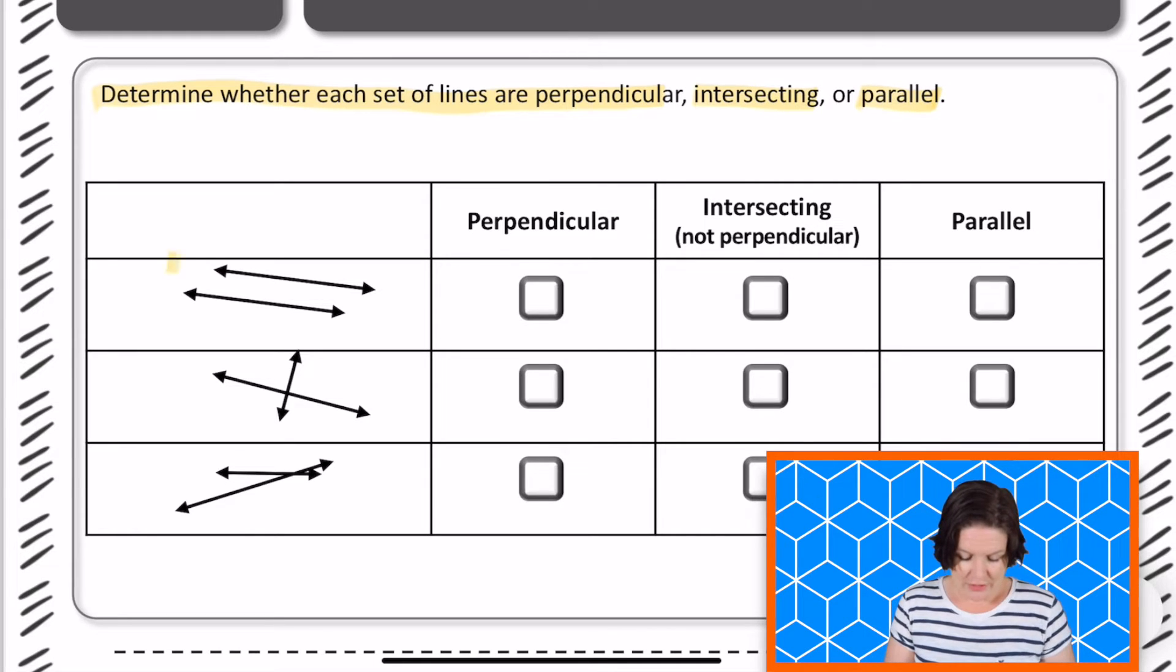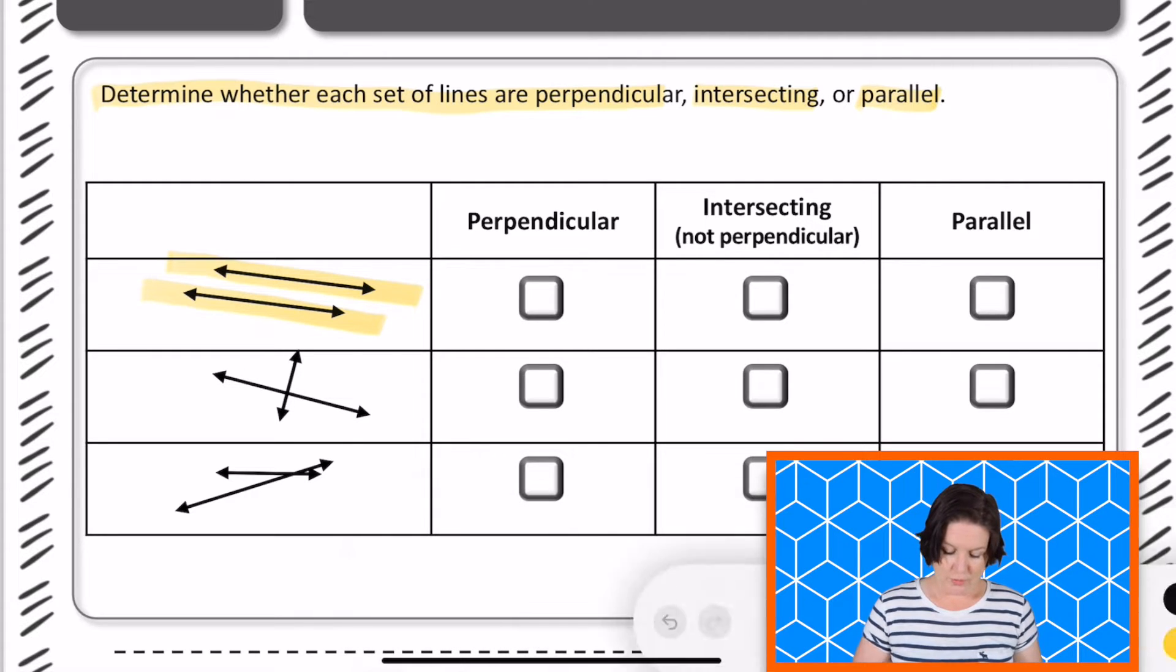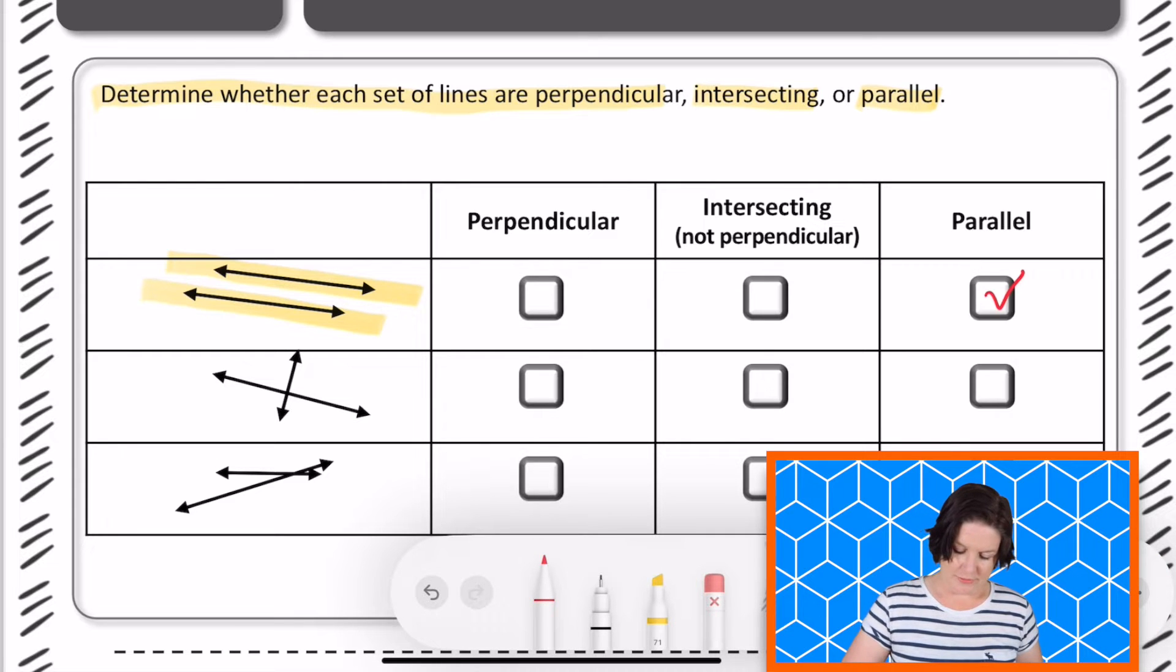So these two lines right here could actually be going in the same directions and they will never ever touch. They'll not run into each other. So the answer for this one would be what? Parallel. That's right.